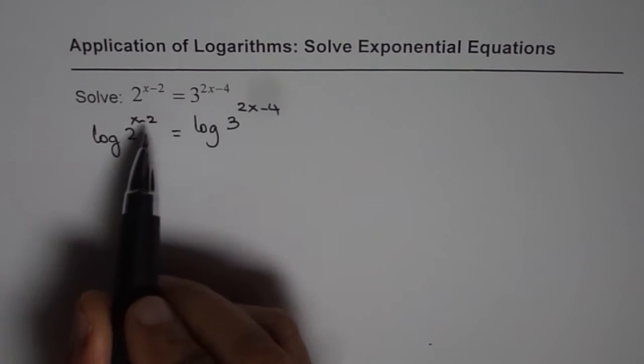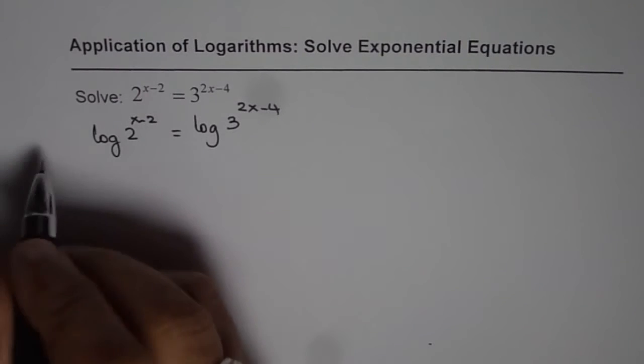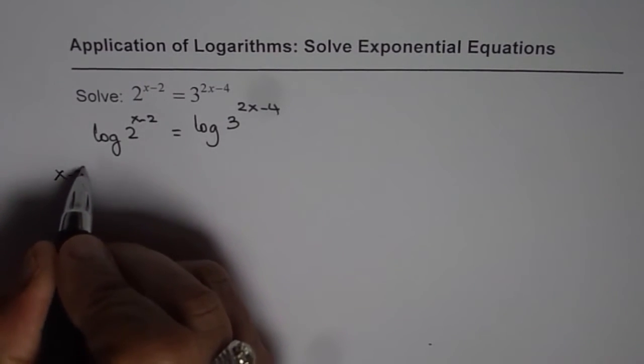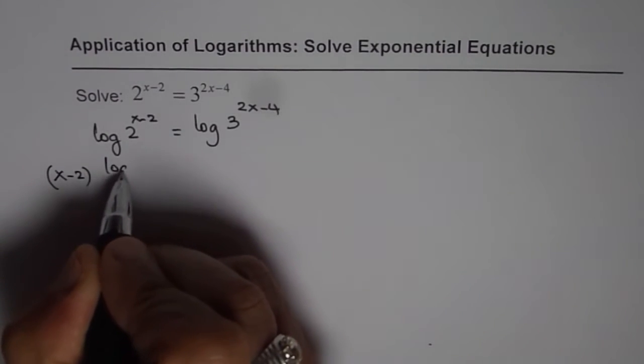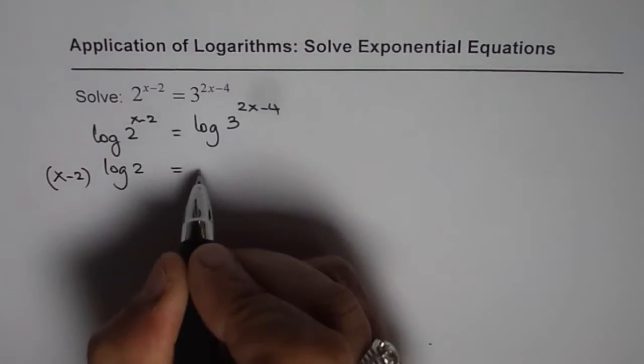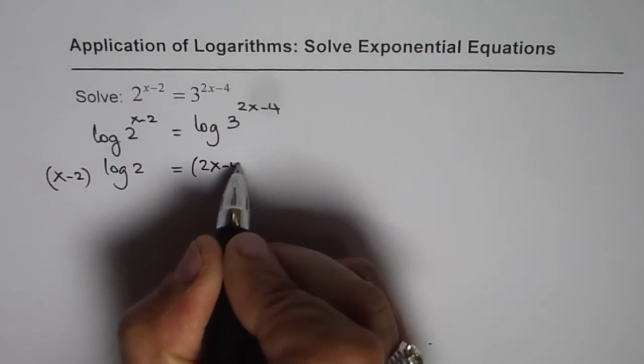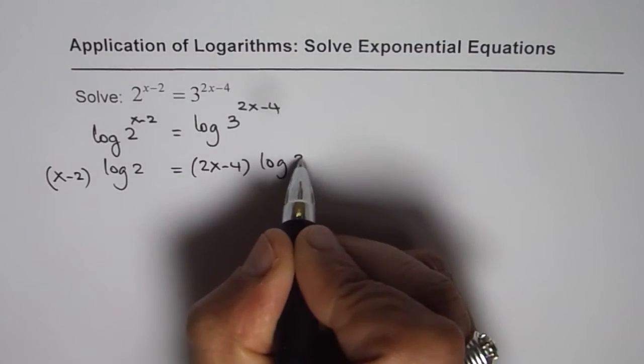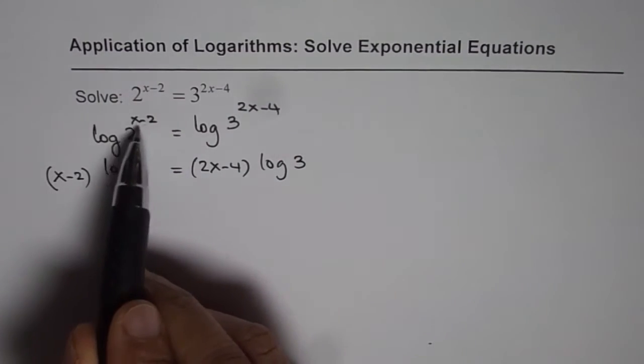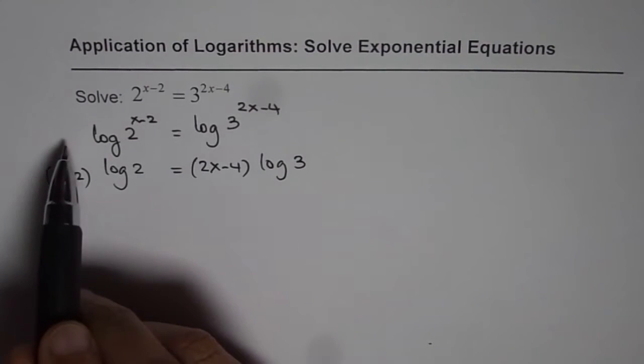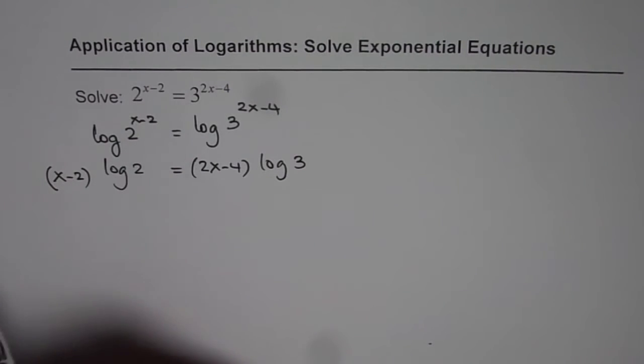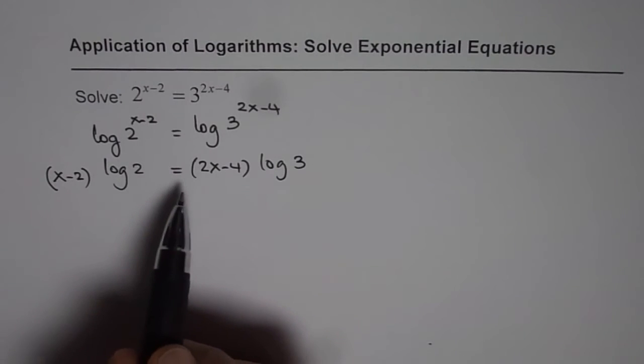Now from the laws of logarithms which you have done, it can be written as x minus 2 times log of 2 equals 2x minus 4 times log of 3. So the power comes here and multiplies. That's the law.